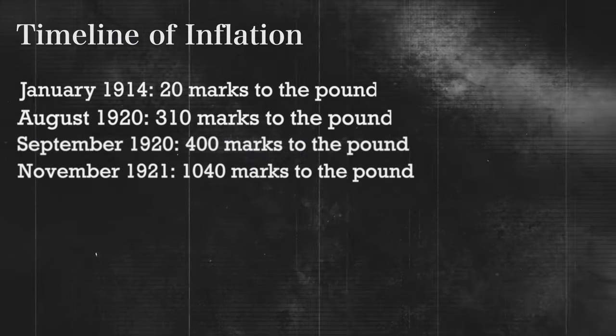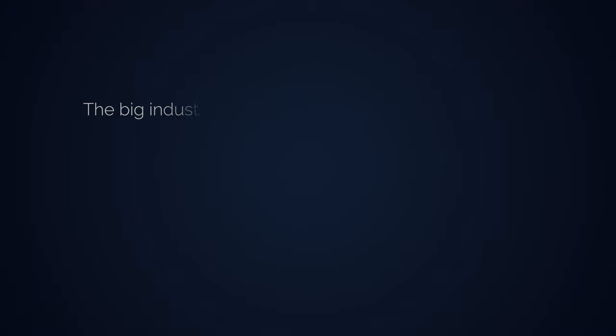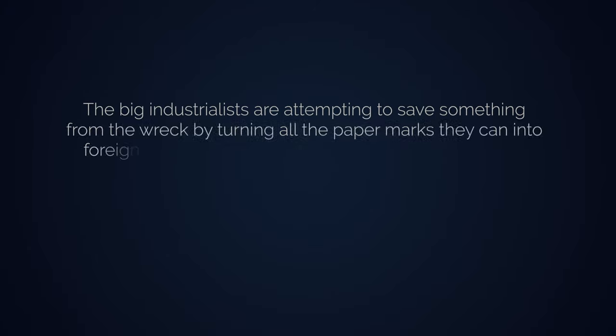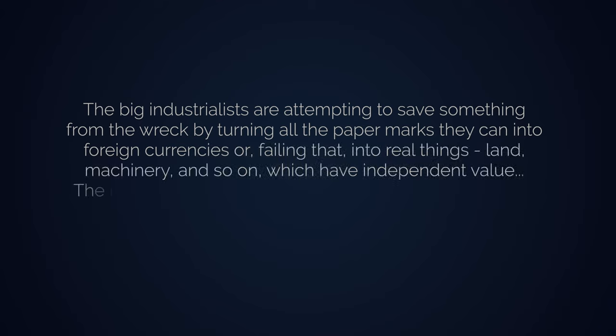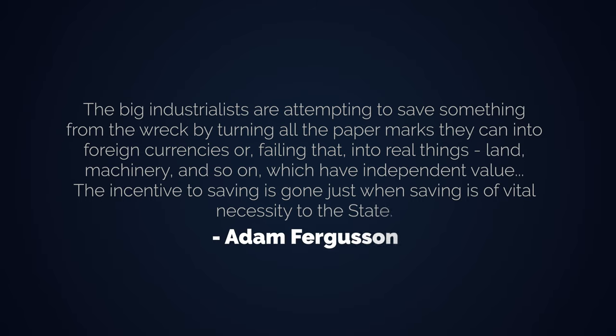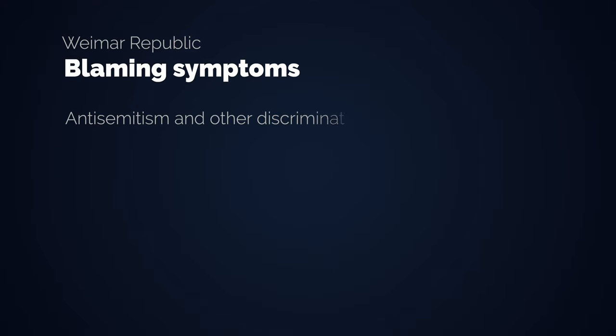These are still baby steps compared to what's about to happen. The big industrialists attempted to save something from the wreck by turning all the paper marks they could into foreign currencies, or failing that into real things — land, machinery — which have independent value. The incentive to saving was gone just when saving was of vital necessity to the state. The Jews were better at these financial matters; they simply realized the currency was failing earlier than others. They made better decisions and were hated for it. Anti-Semitism was on the rise and so was the chaos in the cities.